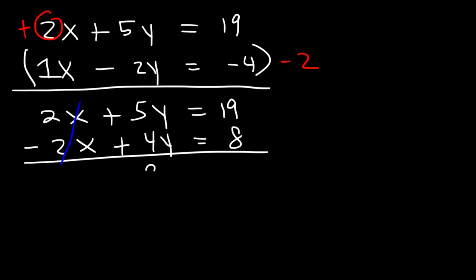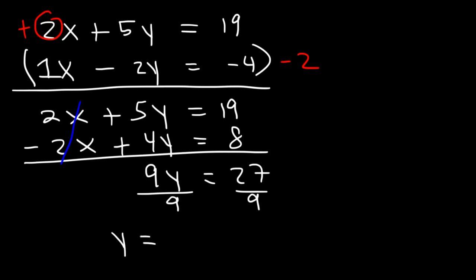Now let's add the two equations. The 2x and negative 2x cancel. 5y plus 4y is 9y, and 19 plus 8 is 27. Dividing both sides by 9, we get 27 divided by 9 equals 3, so y equals 3. Now let's find the value of x.